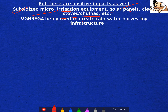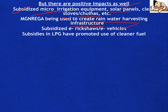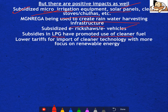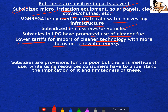MNREGA is being used to create rainwater harvesting infrastructure, which is good for the environment. Subsidized e-rickshaws and electric vehicles are available. Subsidized LPG has promoted the use of cleaner fuel. Lower tariffs for import of cleaner energy are also there, hence promoting renewable energy, which is obviously good for the environment.